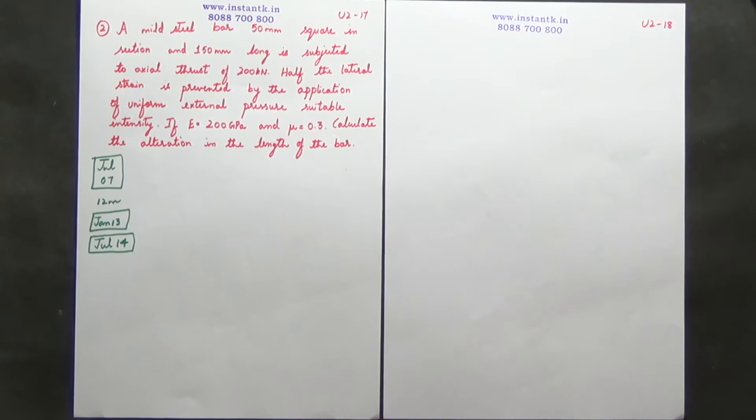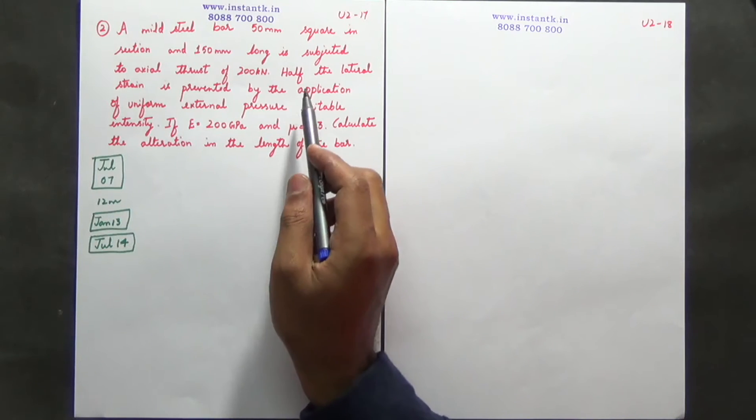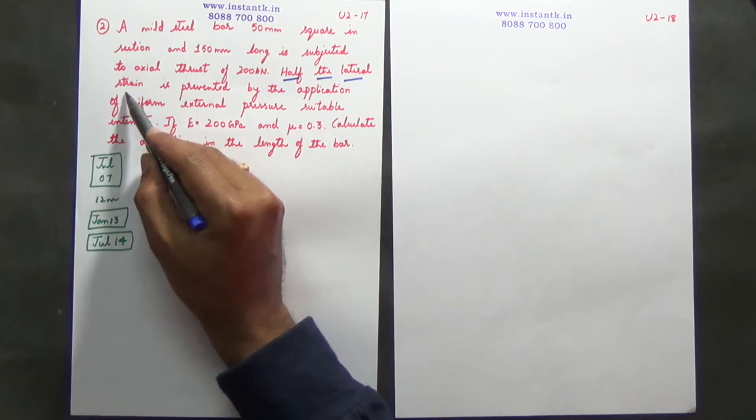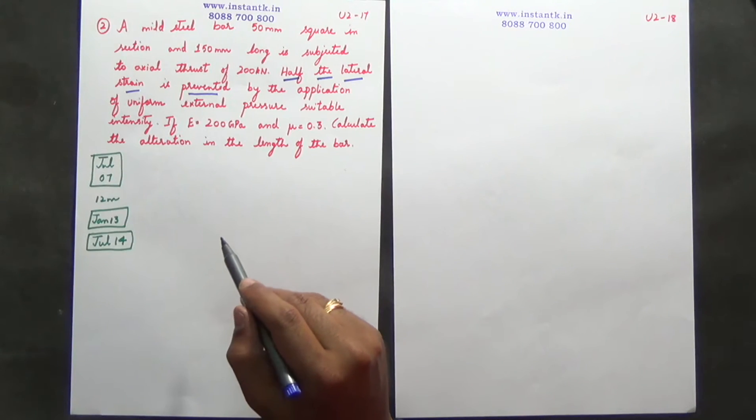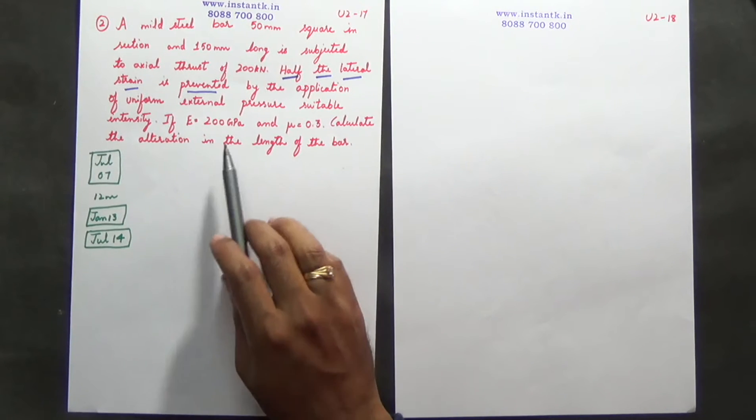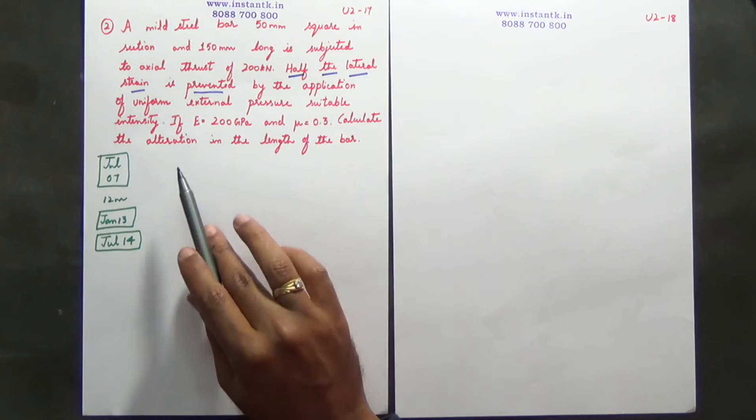Now let's move on to the next problem. A mild steel bar 50 mm square in section and 150 mm long is subjected to an axial thrust of 200 kilonewtons. Half the lateral strain is prevented by the application of uniform external pressure of suitable intensity.